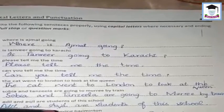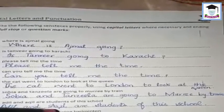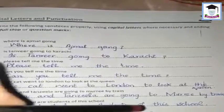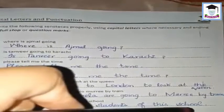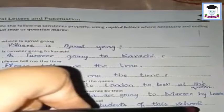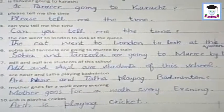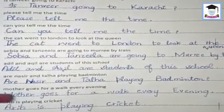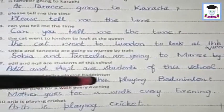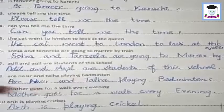The seventh sentence: 'Adil and Akib are students of this school.' Adil's 'A' is capital, Akib's 'A' is capital. After 'school' put a full stop. The eighth sentence: 'Are Nasar and Talha playing badminton?'